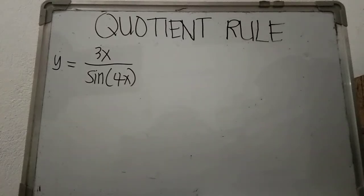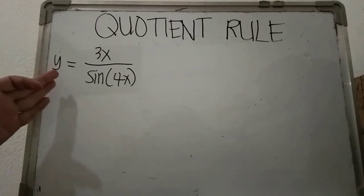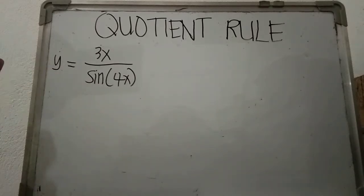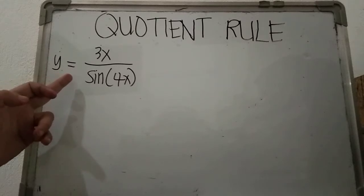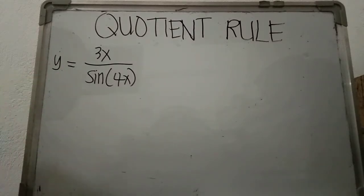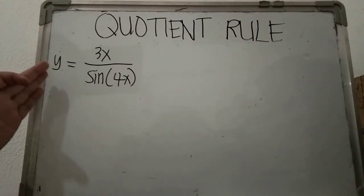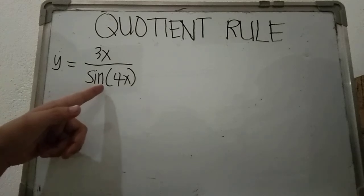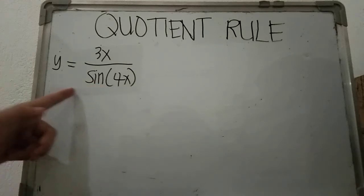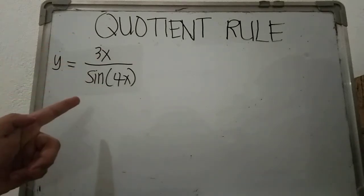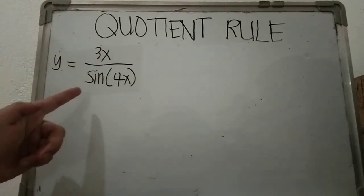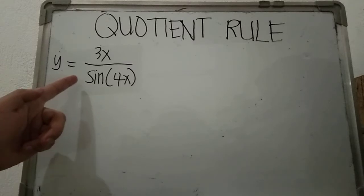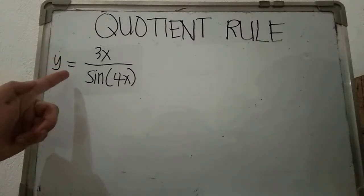In this video we will be discussing finding the derivative of a trigonometric function using the quotient rule. This is a function involving sine, so this is an example of a trigonometric function. Since this is in the form of a fraction, we are going to make use of the quotient rule.